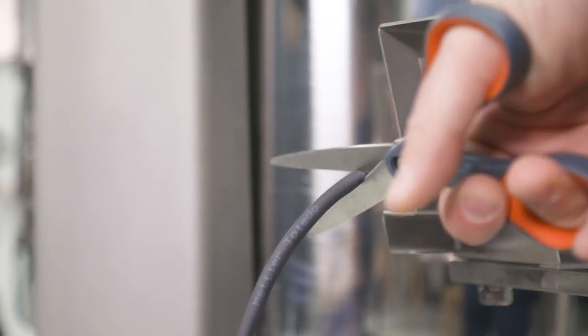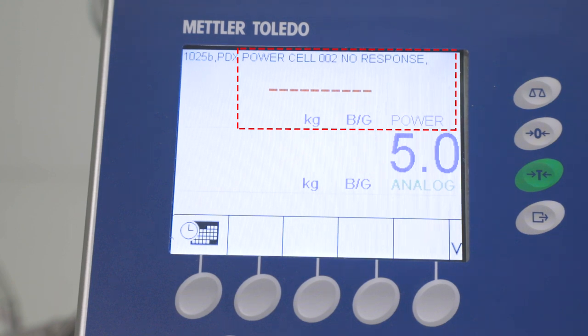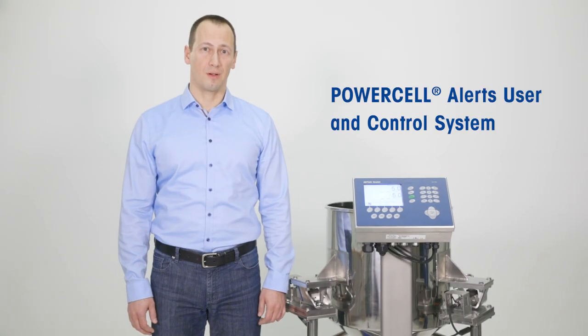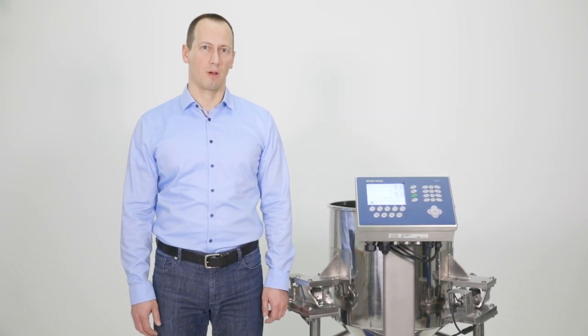Now I'm cutting the PowerCell cable and you see a totally different result displayed on the terminal. In this case, the user and the control system are alarmed and they can react before any real problems occur.